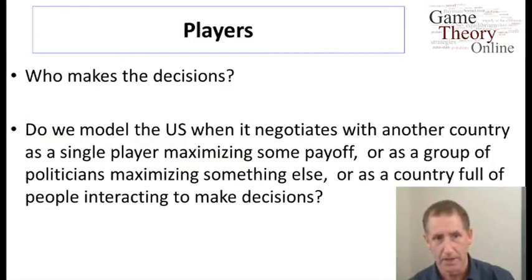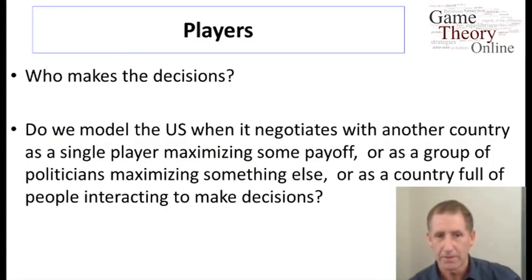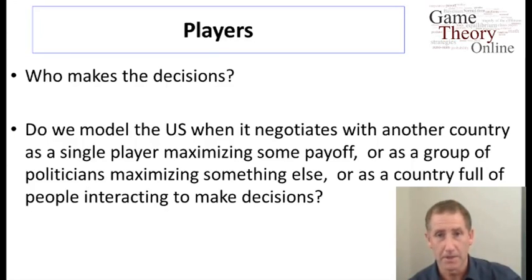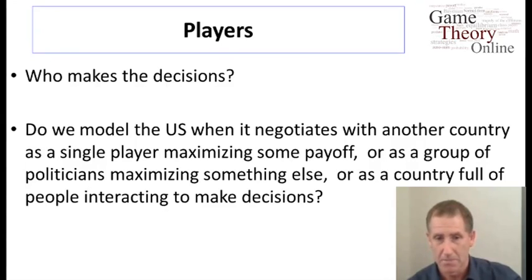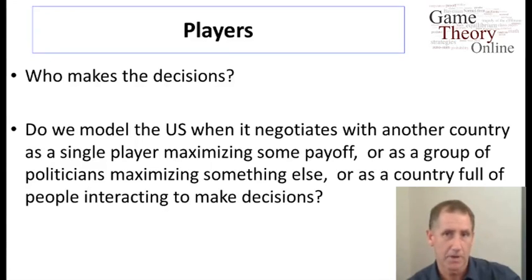Let's start with the players. Who are these decision-makers? Let's take an example. When we're speaking about negotiation among countries, are we speaking about the U.S. as a single entity? Are we speaking about some political party or some office, the State Department, or about all the citizens? It's a decision we need to make as modelers, and that's the first thing we need to do.